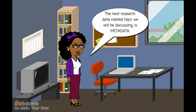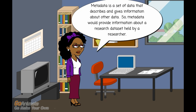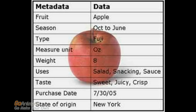The next research data related topic we will be discussing is metadata. Metadata is a set of data that describes and gives information about other data. Metadata would provide information about a research data set held by a researcher. Here is a simplified example showing metadata added to the concept of an apple: the name of the fruit, its season, weight, uses and origin have been added.